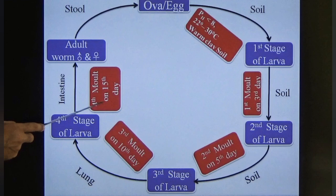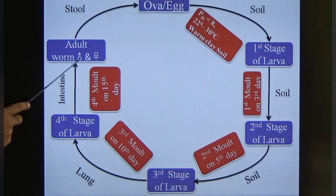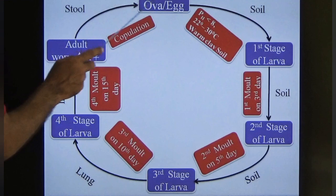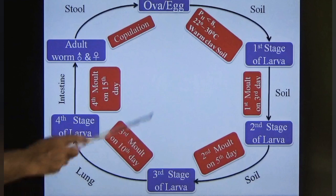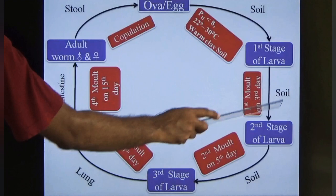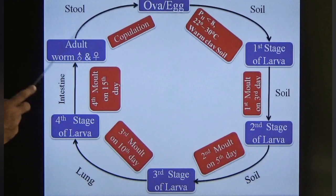Key points: the third-stage larvae is the infective form. The first two moldings happen in the soil. The third molding happens in the lungs. The fourth molding happens in the intestine.